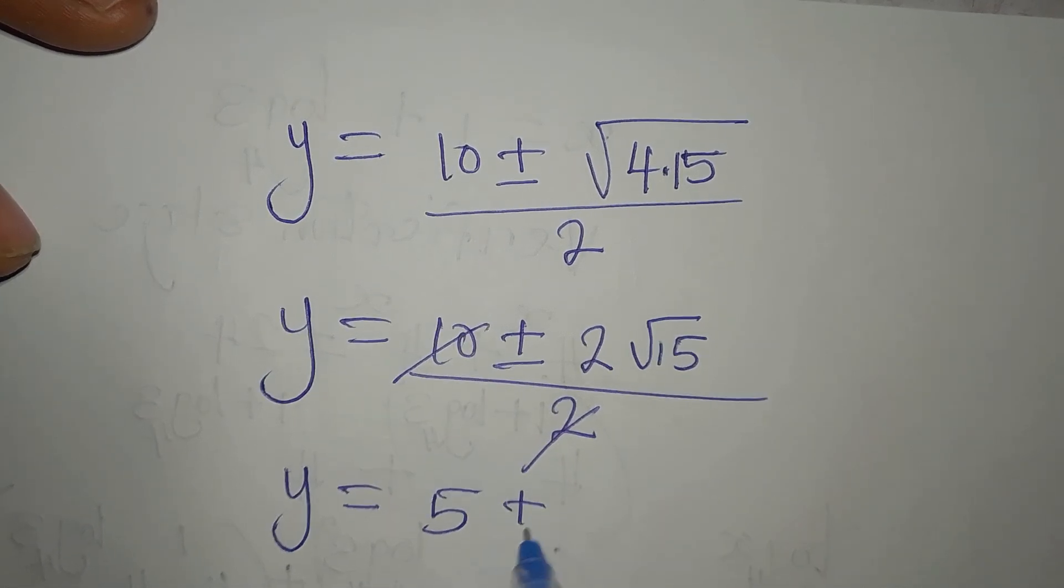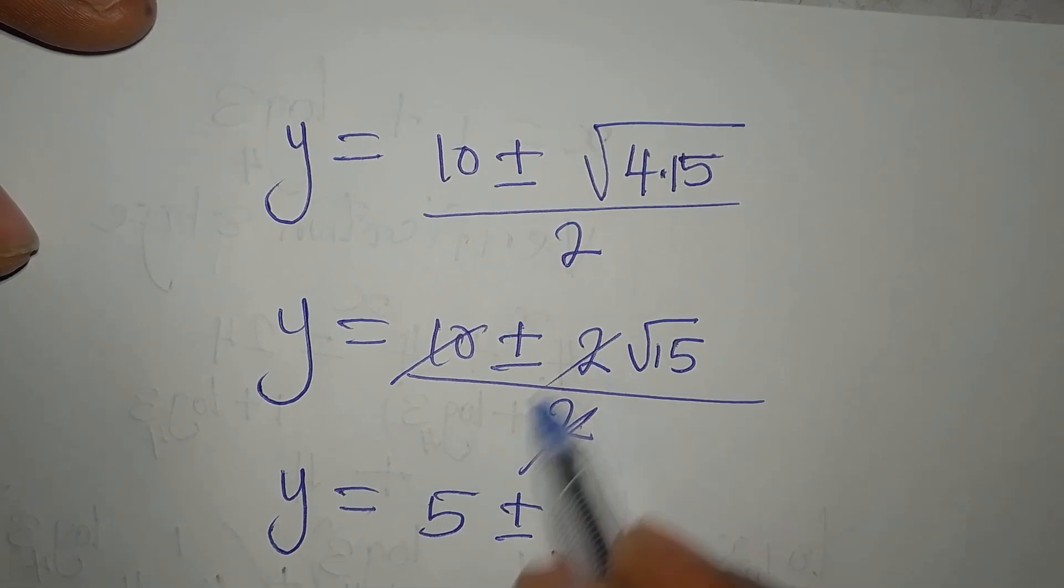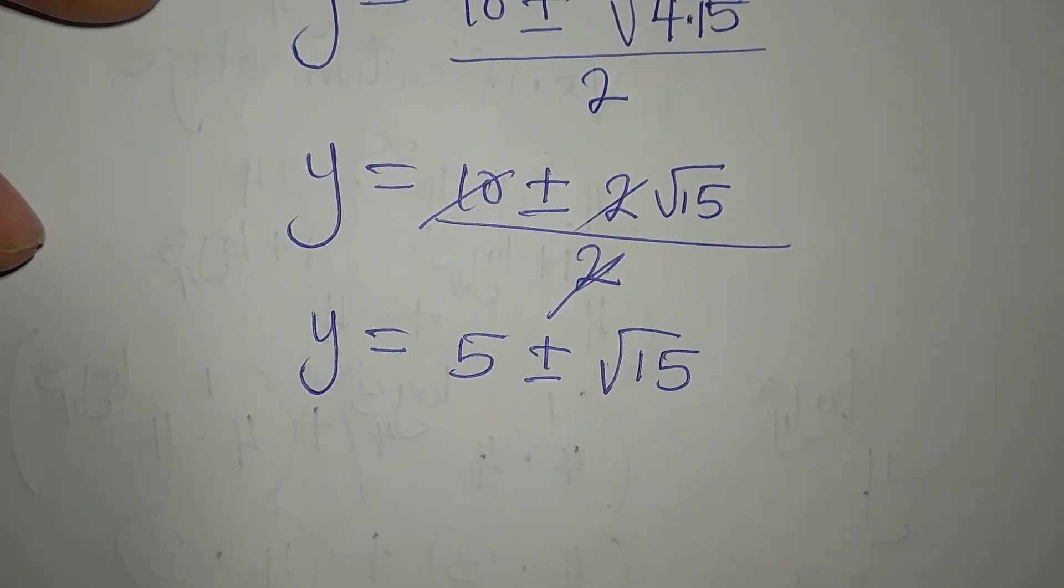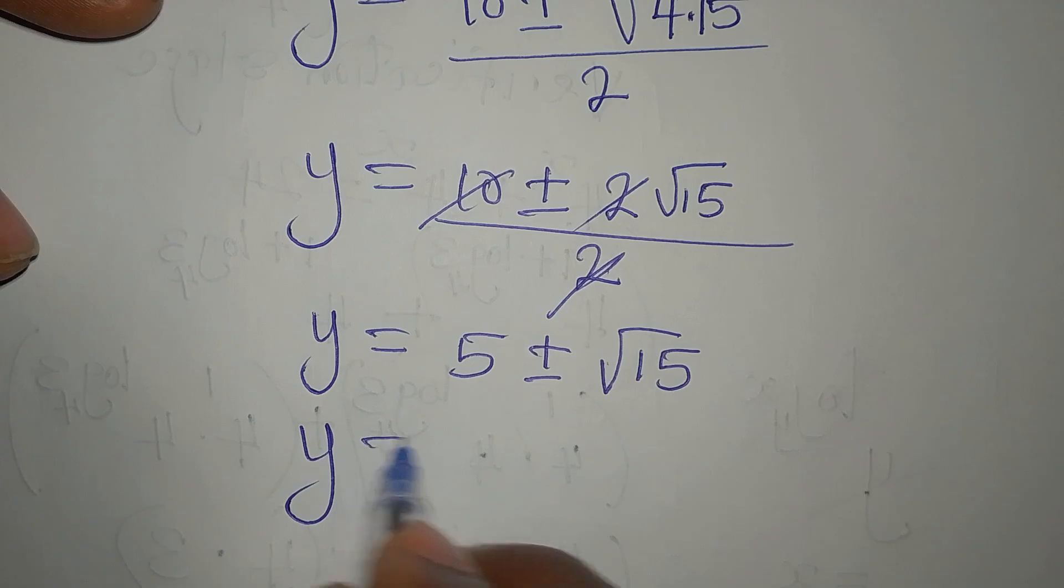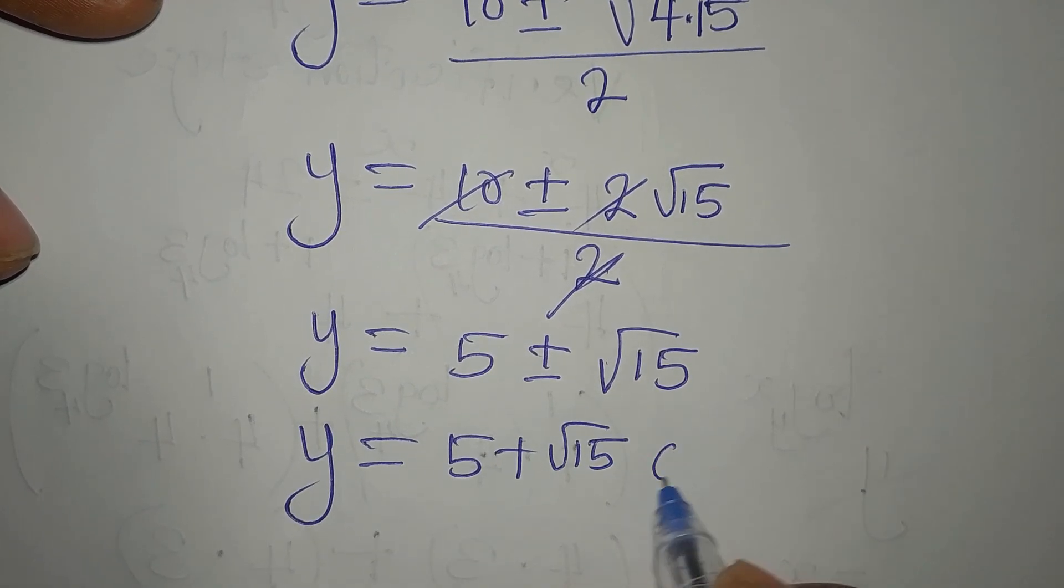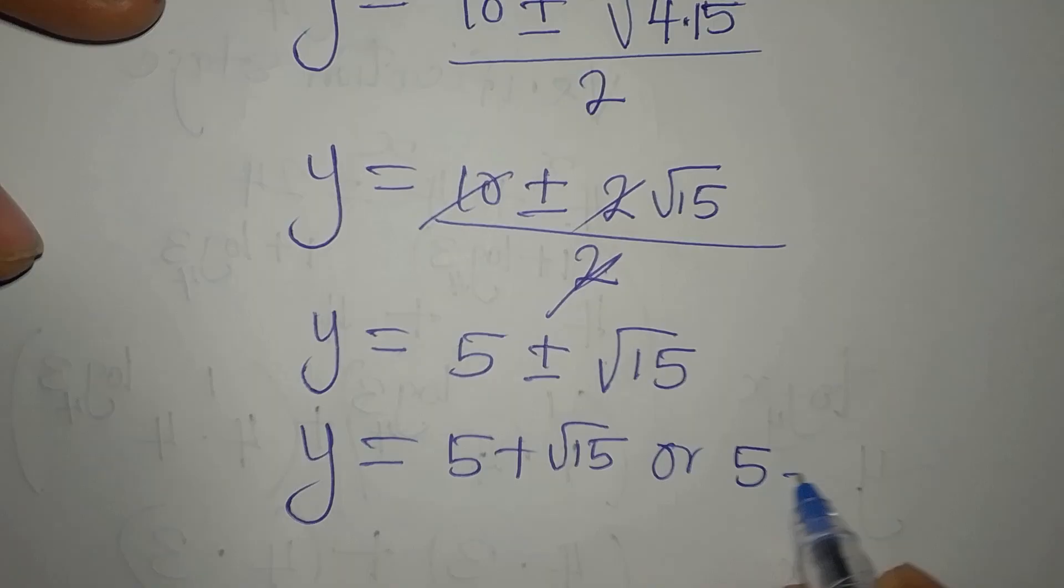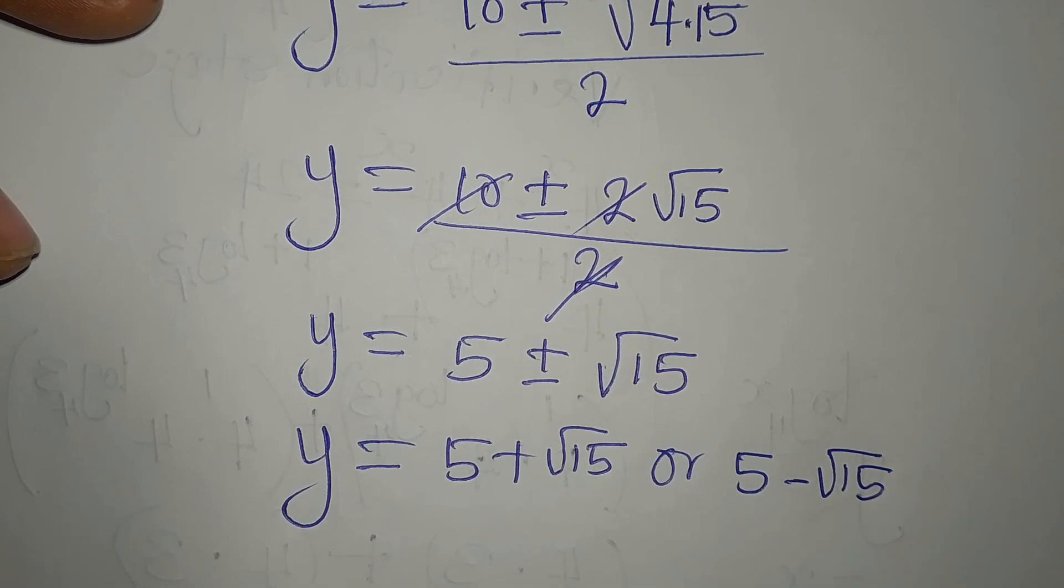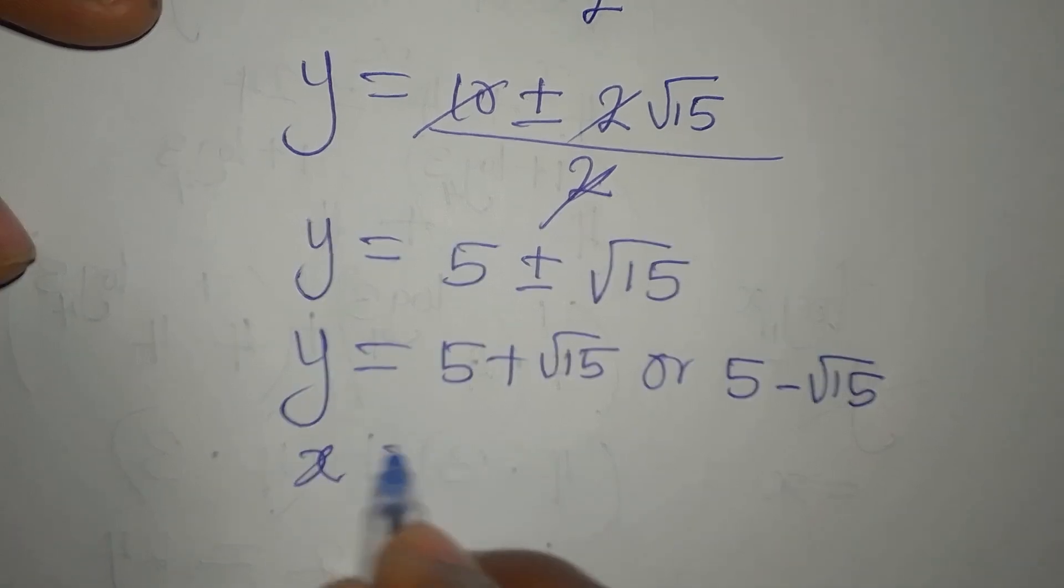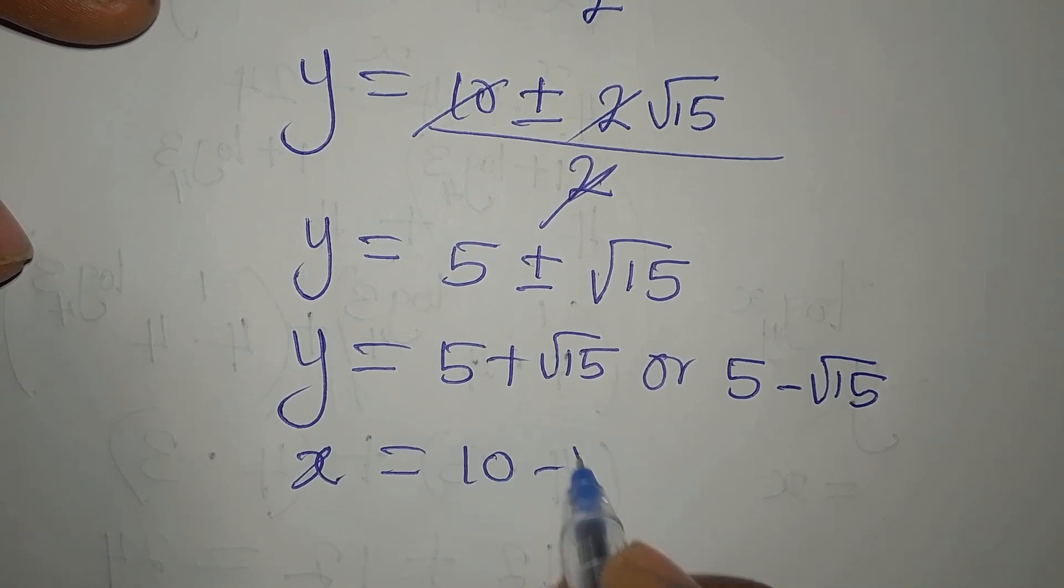Then, plus or minus, 2 will go into this 2 again. So we have just root 15. So this is a 2 in 1 solution because Y will now be 5 plus root 15 or 5 minus root 15. Now, remember that we had equation 3 before and that is X equals 10 minus Y.